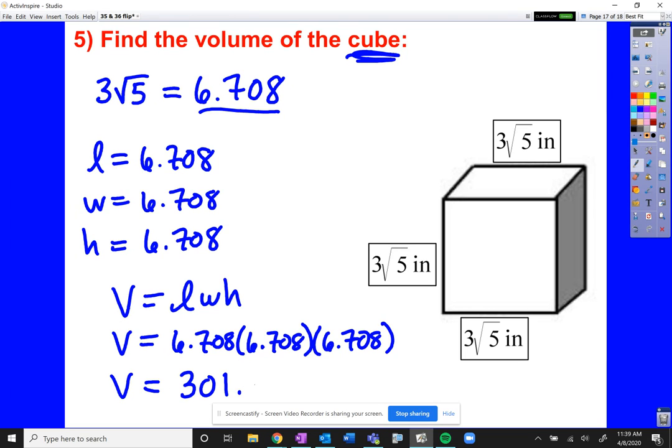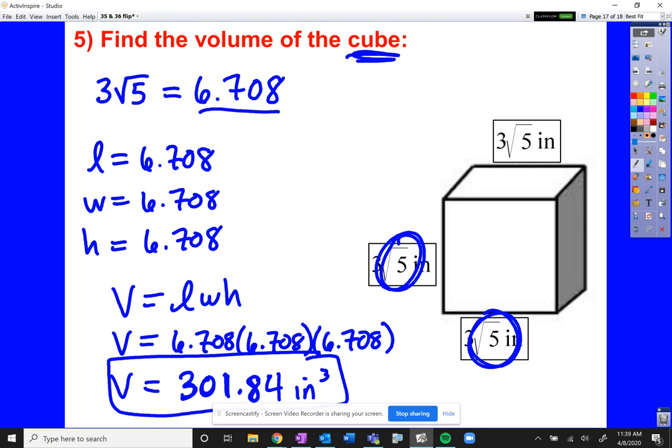Now remember, if none of your answers look like this and your answers have stuff like the square root 5 in it, then just match it up, right? Match up which of your answers comes closest or really, really close to something around 301.84, and you'll be all set.